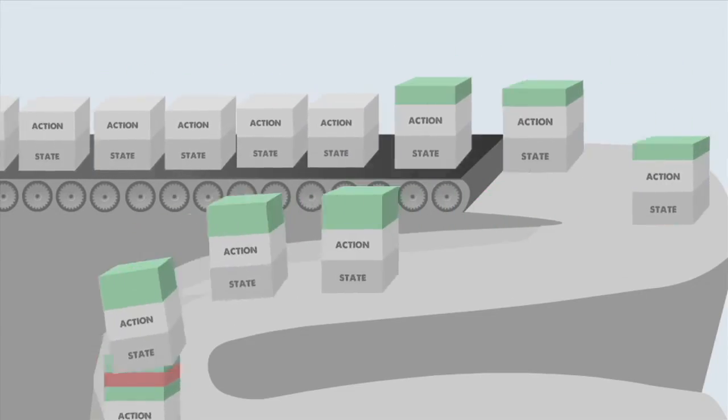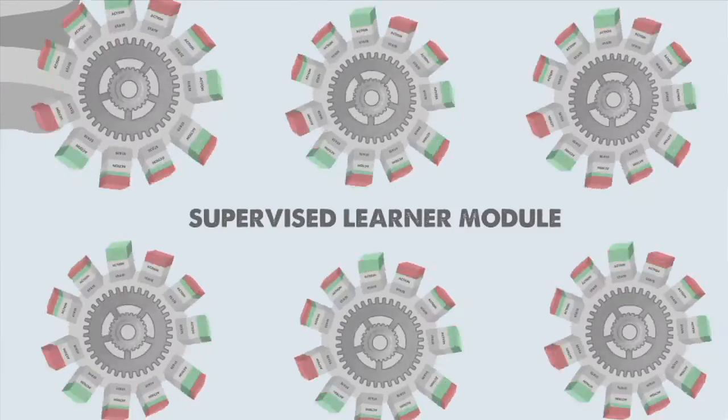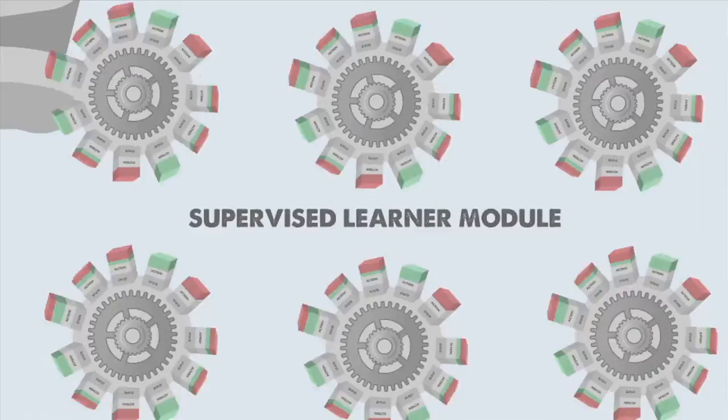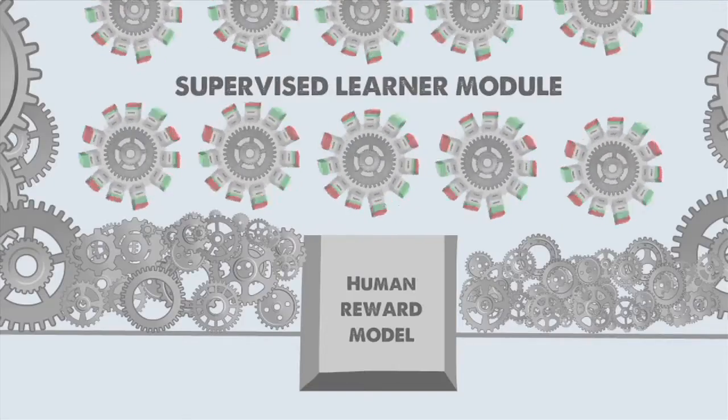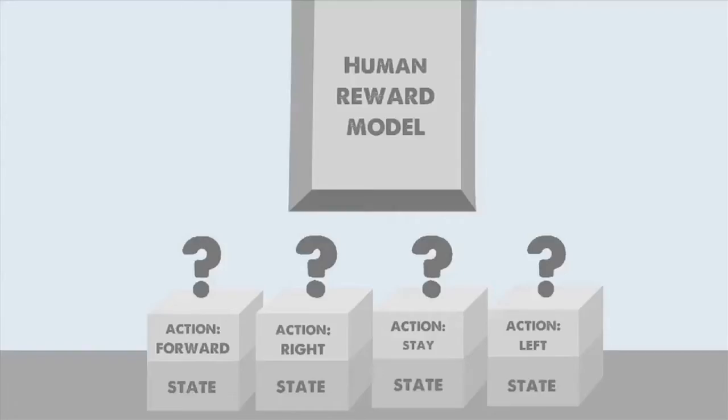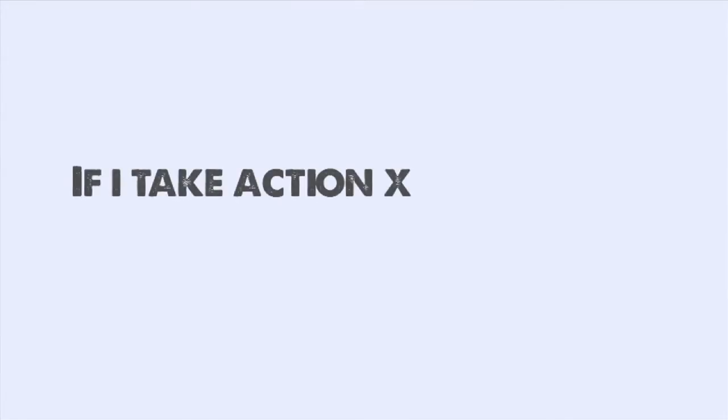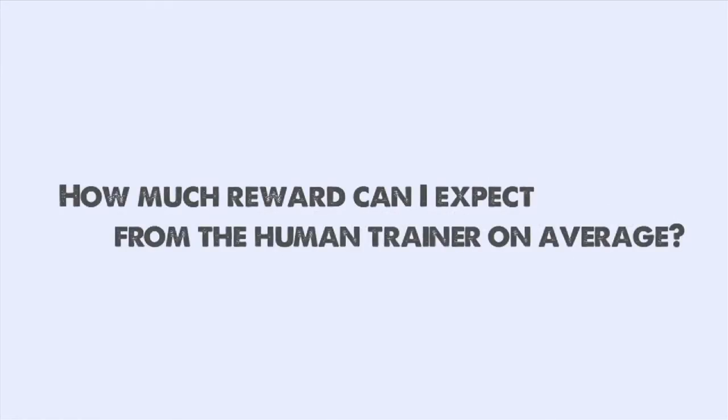A state-action pair and its reward sum create a learning sample for the supervised learner module, which in turn uses all of the samples it takes in to create a model of human reward, effectively answering for the agent: If I take action X while in task state Y, how much reward can I expect from the human trainer on average?